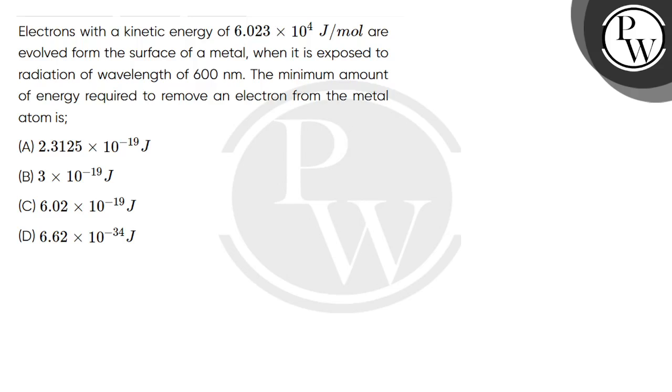Hello students, let's see this question. The question says, electrons with a kinetic energy of 6.023 × 10^4 joules per mole are evolved from the surface of a metal when it is exposed to radiation of wavelength 600 nanometers. The minimum amount of energy required to remove an electron from the metal atom is...